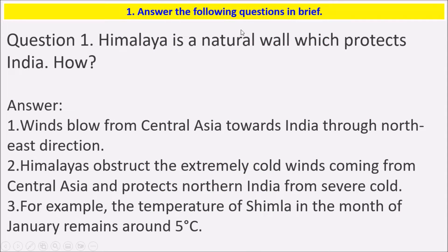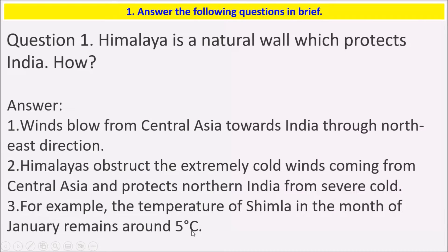The first question is: Himalaya is a natural wall which protects India — how? So, winds blow from central Asia towards India through the northeast direction. The Himalayas obstruct the extremely cold winds coming from central Asia and protect northern India from severe cold. For example, the temperature of Shimla in the month of January remains around 5 degrees Celsius.